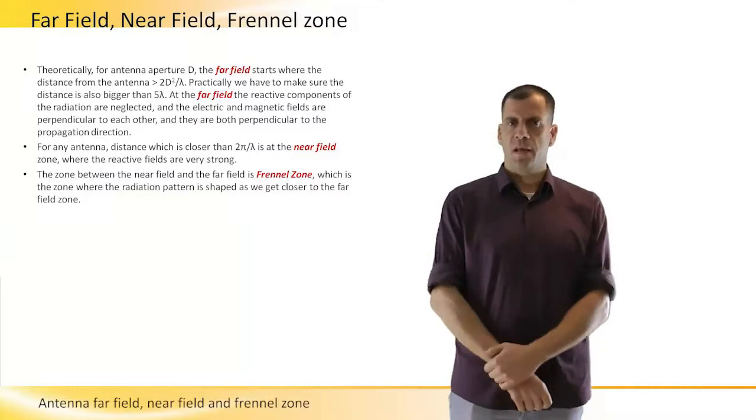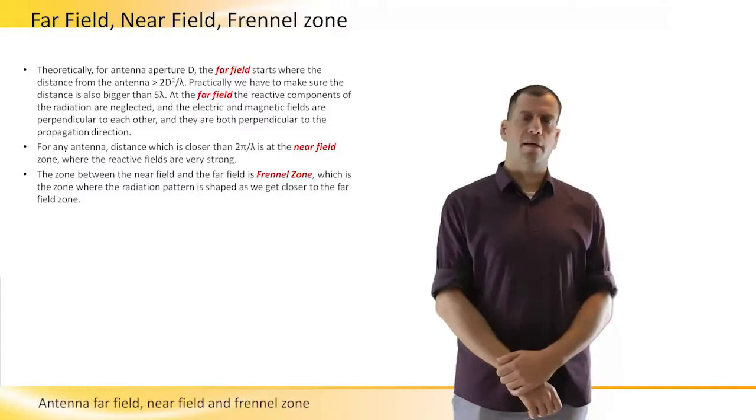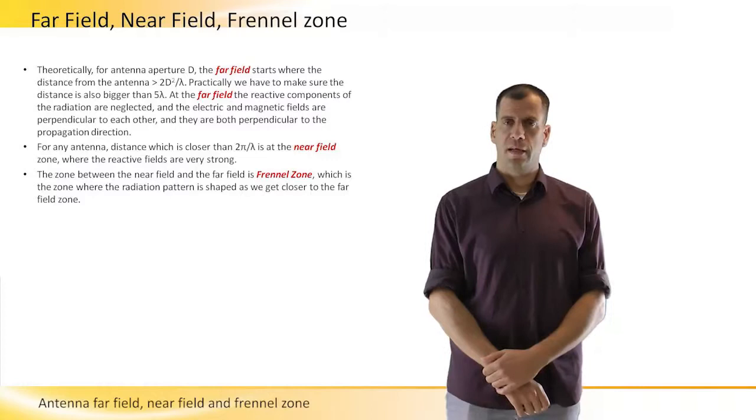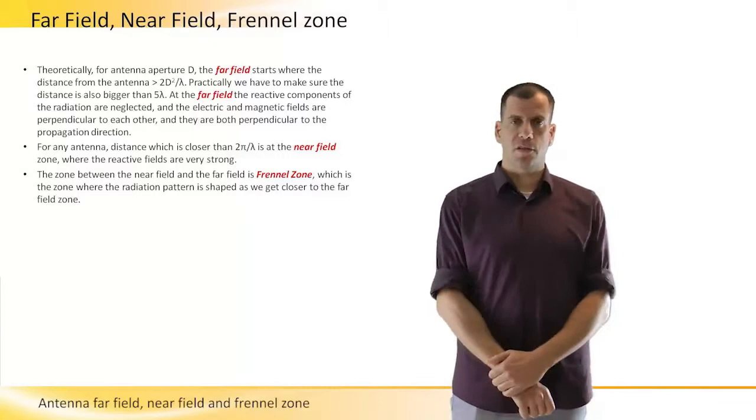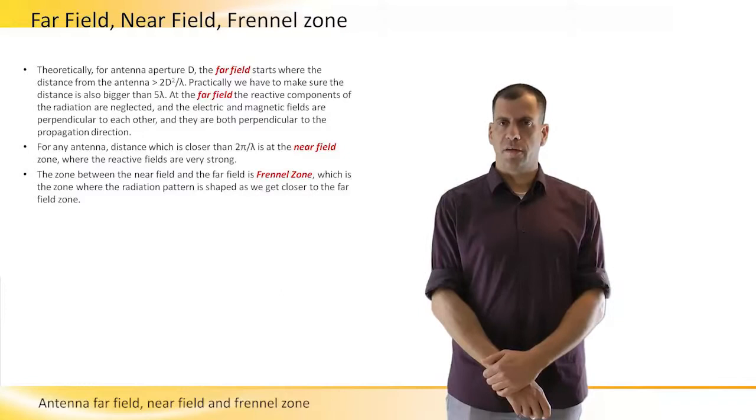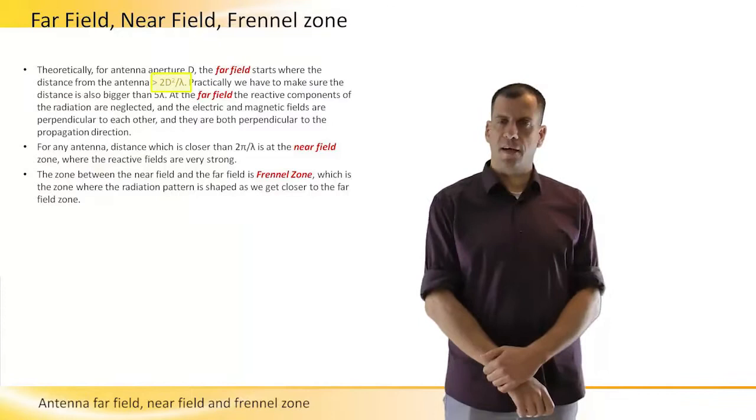Let's start from the far field. The far field is the zone where the electric and magnetic fields are perpendicular, as we discussed before. The far field is far enough from the antenna that we actually get a planar wave. This starts at ranges longer than twice the antenna aperture squared divided by the wavelength.